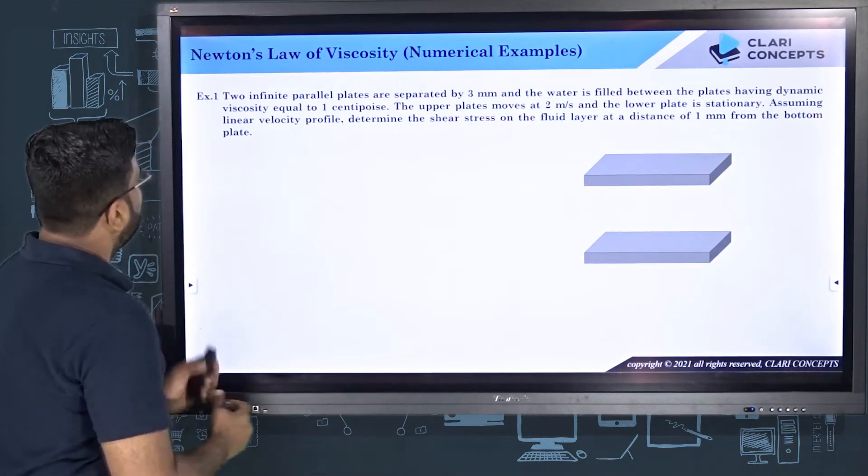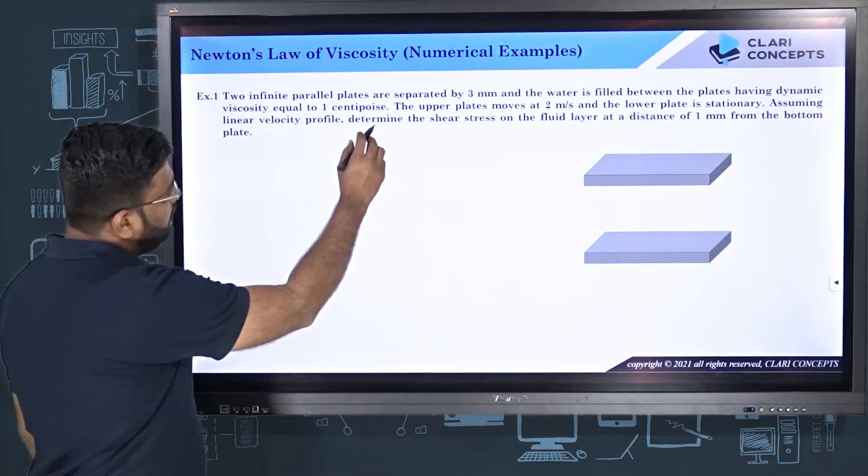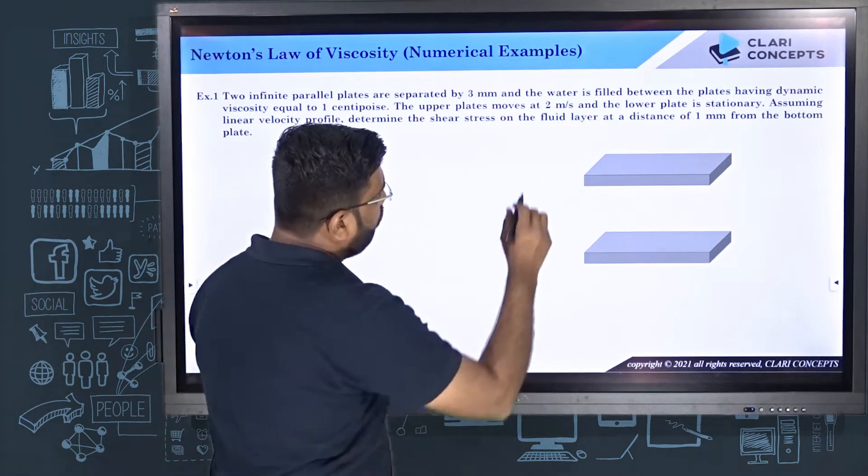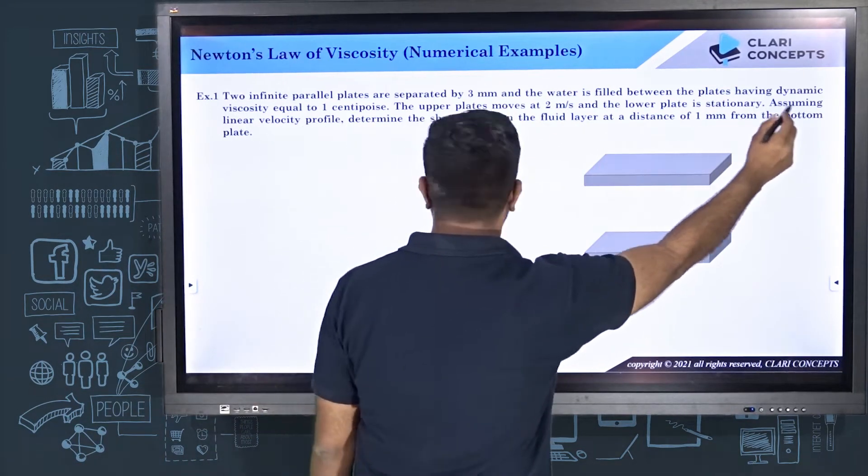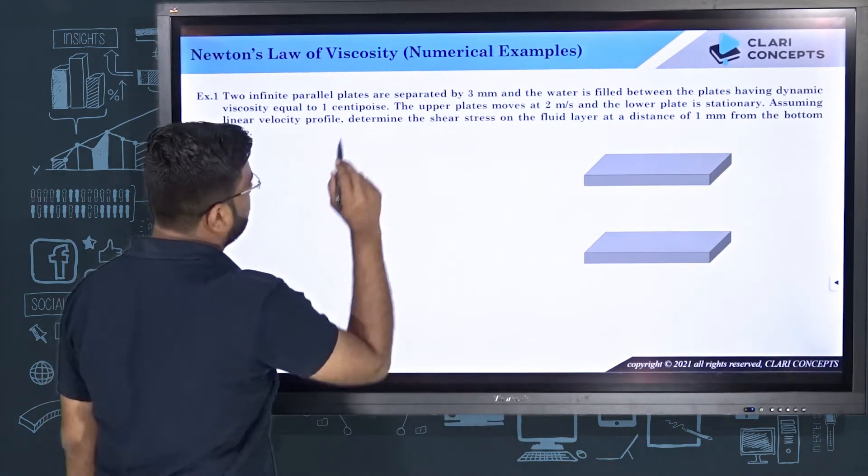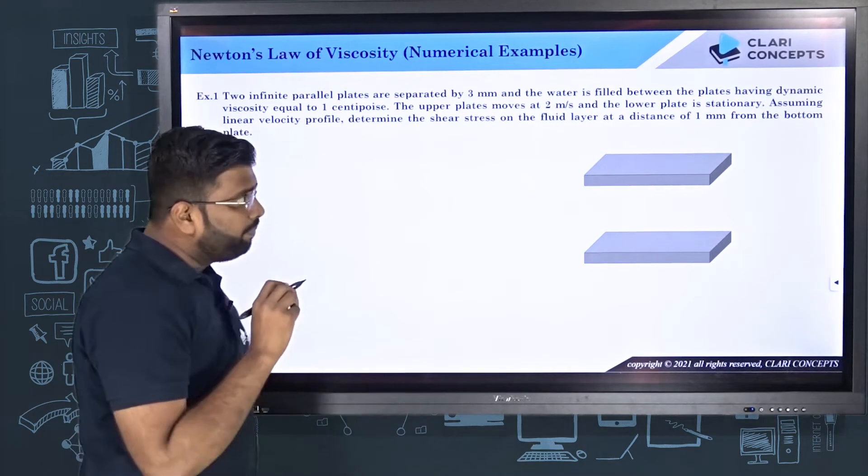We have two infinite parallel plates separated by a distance of 3mm, and water is filled between the plates having dynamic viscosity equal to 1.70 poise. Now, before I move on to the numerical, I would like to give you several suggestions for solving numericals in engineering.